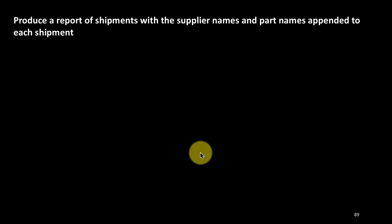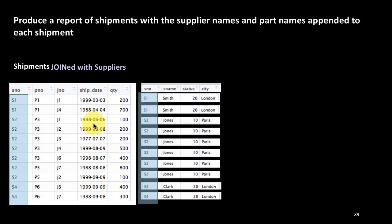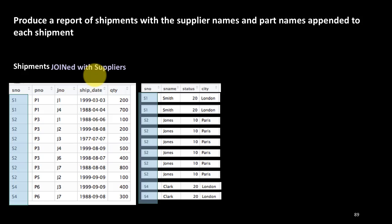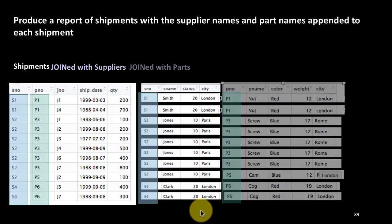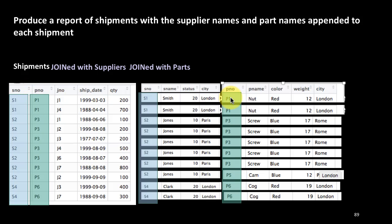Let's look at another example. We want to produce a report of shipments with the supplier names and part names appended to each shipment. The shipments table only has supplier number and part number, but we want supplier names and part names, which have to come from the supplier and parts tibbles respectively. So this time we have three tibbles to join. We've joined shipments with suppliers, matching every shipment with its corresponding supplier using shipments inner join suppliers.